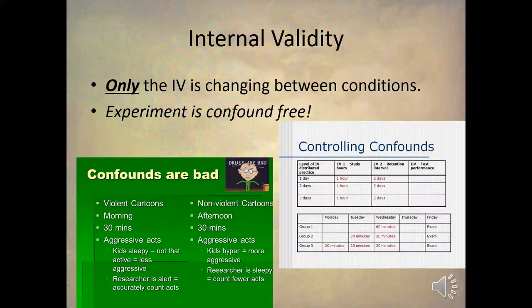The idea is that we've gotten rid of all the confounds in our experiment, and so only the IV is changing between conditions. That is, if we have a two-condition experiment, the only thing that's different across the control and experimental conditions would be the level of the independent variable. Therefore, any difference we see in the dependent variable has to be caused by the IV, and we've basically demonstrated that relationship. That's what an experiment is all about.